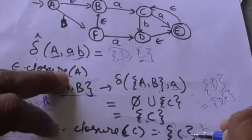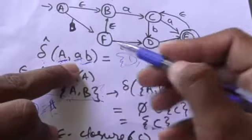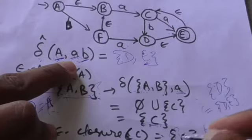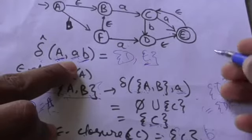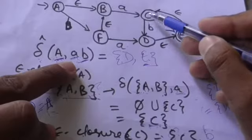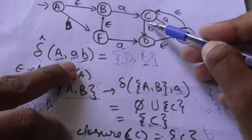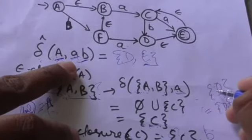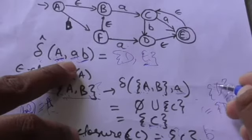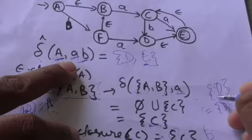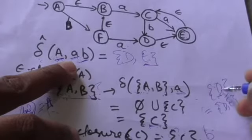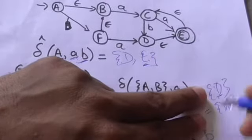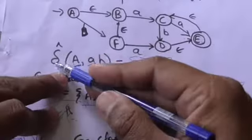Now apply the second input symbol b to this set containing only state c. From state c, for input symbol b, there is a transition to state d. So we get a set having one state, d. Now find ε-closure(d) — it will have two states: d and e.